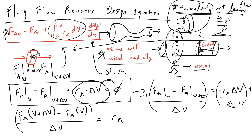And now if we take the limit on both sides as delta V goes to zero, what we arrive at is RA is equal to dFA dV.